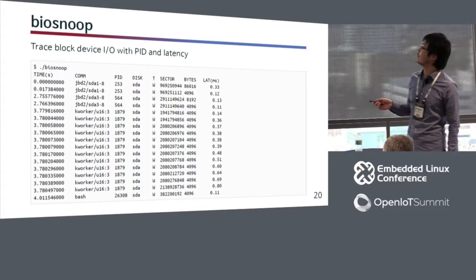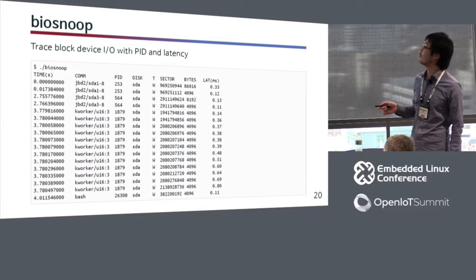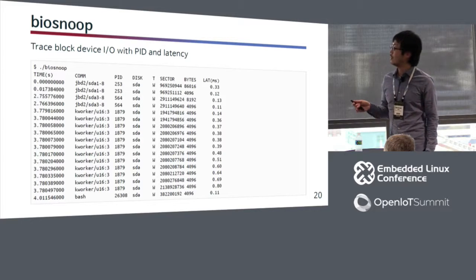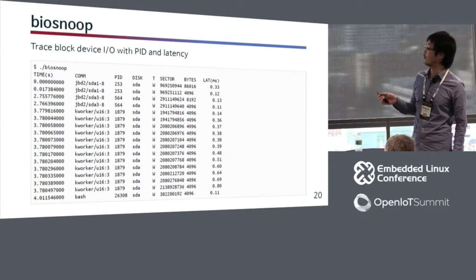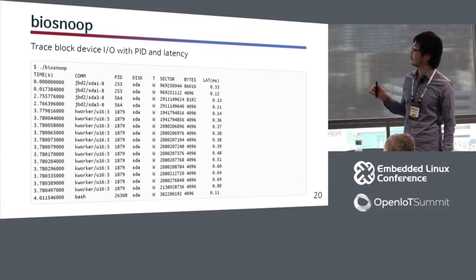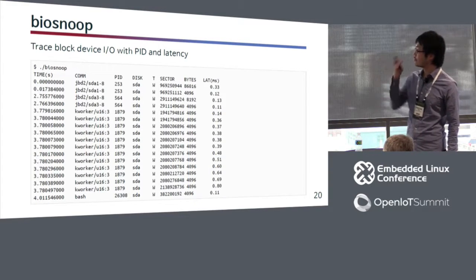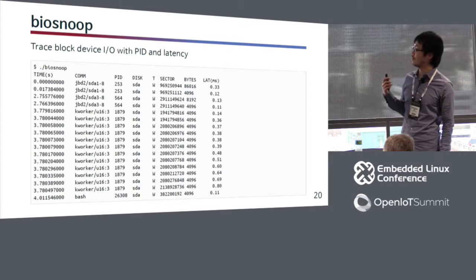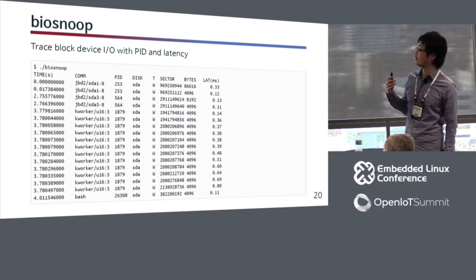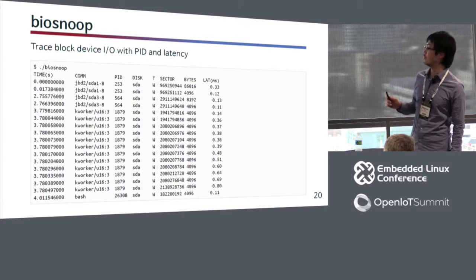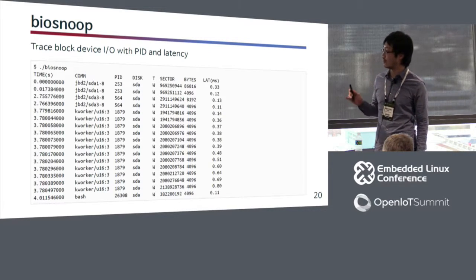Biosnoop traces block device I/O with PID and latency, and there is more information like sector location and size. This is useful for analyzing storage issues, such as performance issues or issues with drivers.